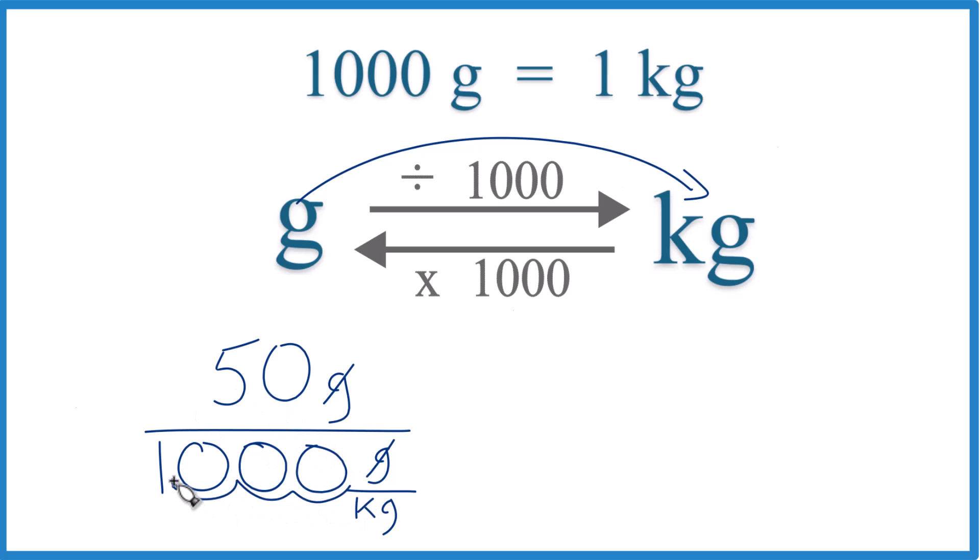Let's move 1, 2, 3 decimal places. That gives us 1. And here, 1, 2, 3 decimal places. And put our zero in here.